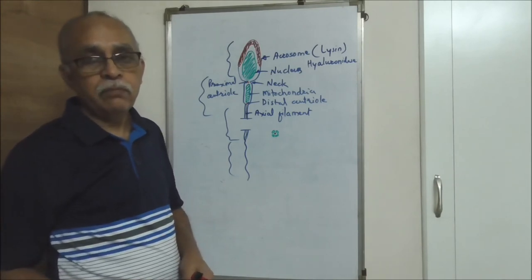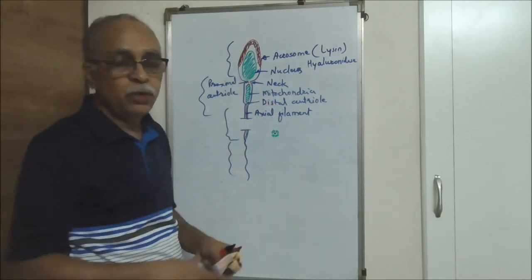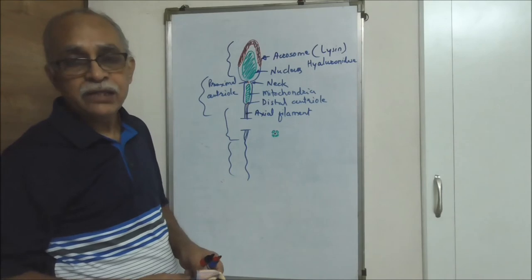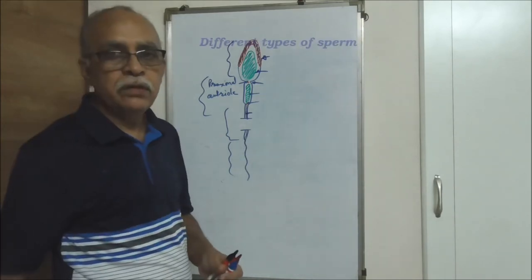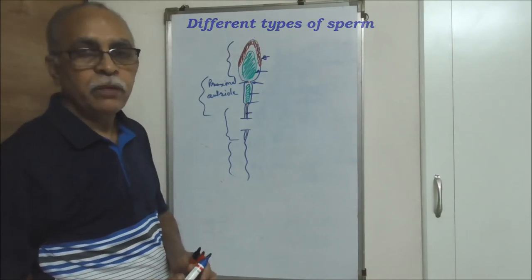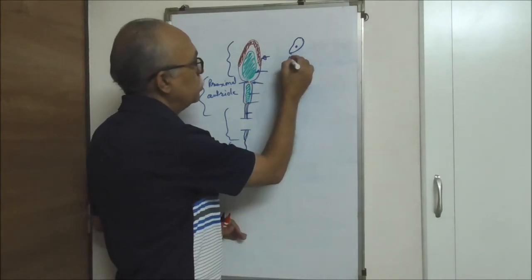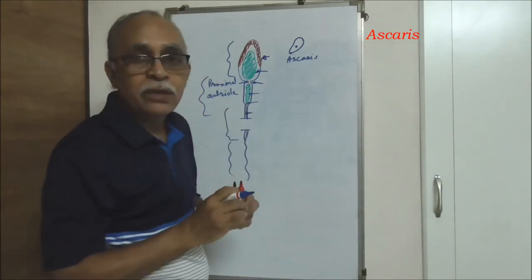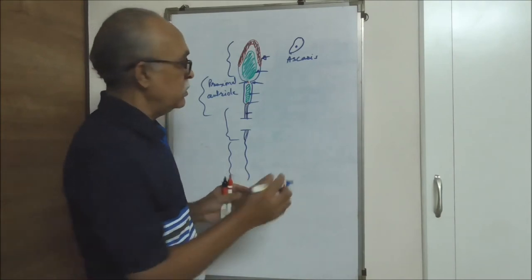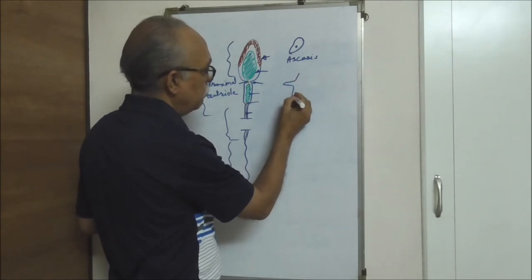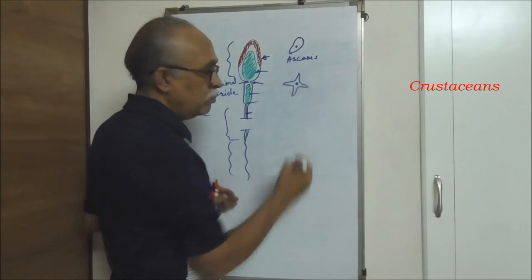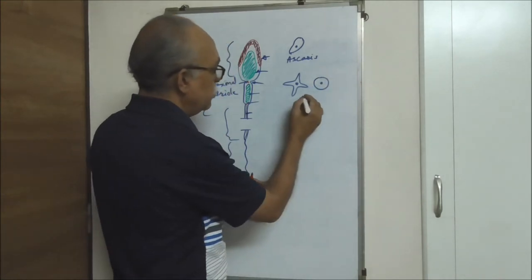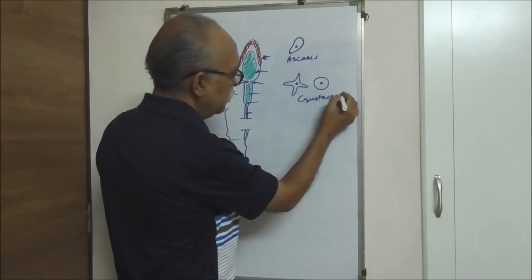When we talk about the animal kingdom, it's not necessary that all parts will be just as we've seen here — there is a possibility of remarkable variation in morphology and structure. In the case of Ascaris, the sperm doesn't have a tail or mid piece — it's just a small cellular structure. In the case of a few crustaceans, there are different morphologies possible.